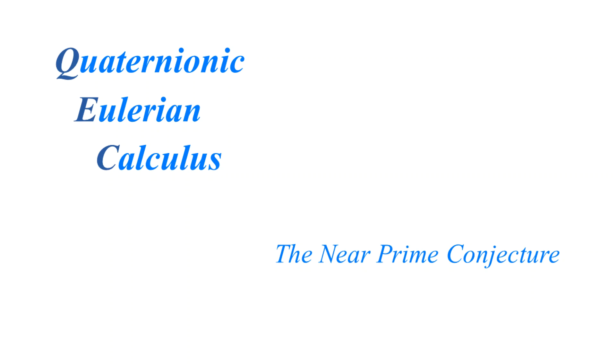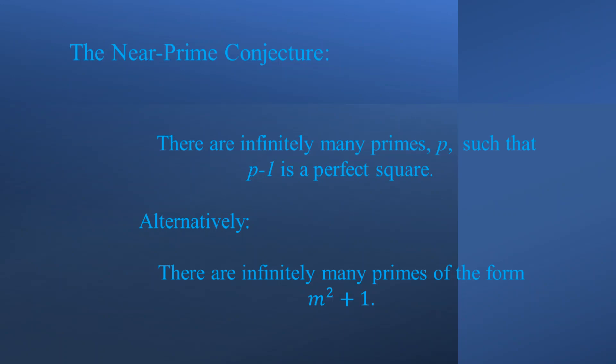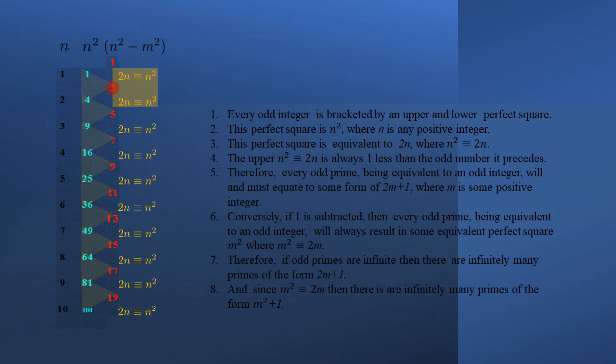I have saved the near prime conjecture for last. It actually gives us deeper insight into some of the rules of number theory. The near prime conjecture asks: are there infinitely many primes p such that p minus 1 is a perfect square? Or in other words, are there infinitely many primes of the form m squared plus 1? The answer easily follows from solving Legendre's conjecture. Every odd integer is bracketed by an upper and lower perfect square, n squared, where n is any positive integer. Some positive integer m is not any positive integer n — do you notice the difference?